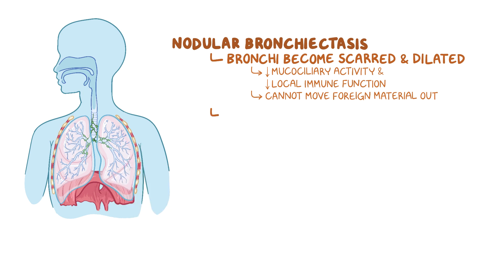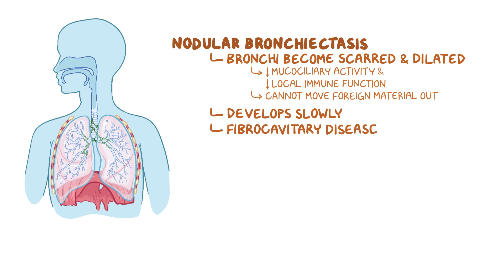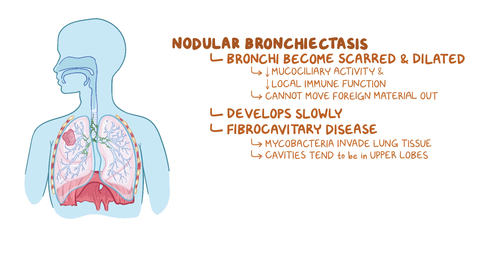Nodular bronchiectasis tends to develop slowly, but in some cases the more aggressive and severe fibrocavitary disease occurs. Here, the mycobacteria invades the lung tissue, causing damage, severe fibrosis, and formation of cavities, much like tuberculosis. Since MAC are aerobic organisms, these cavities tend to be in the air-rich upper lobes of the lung.